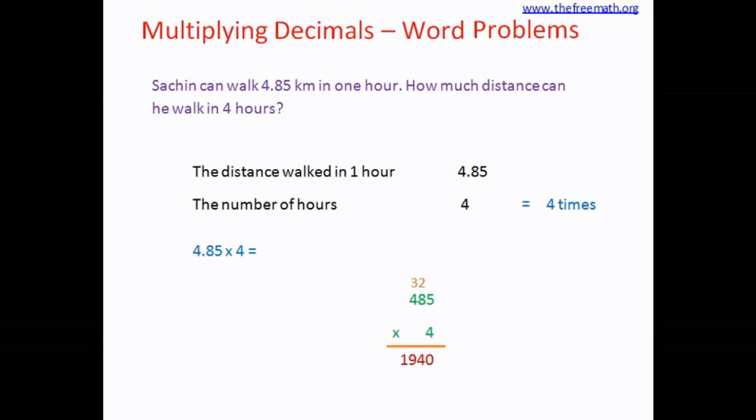So the product is 1940. If you look at the decimal number 4.85, there are two decimal places, so the answer should also have two decimal places. Therefore the answer is 19.40 or 19.4.